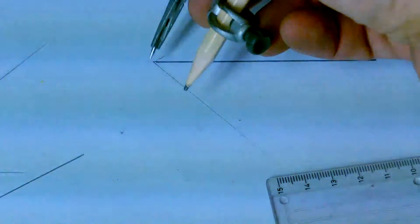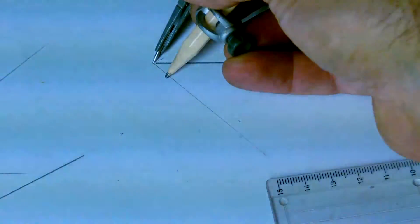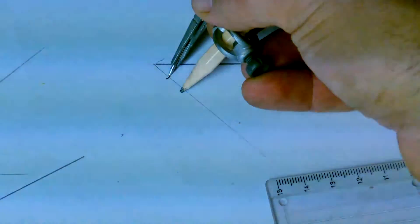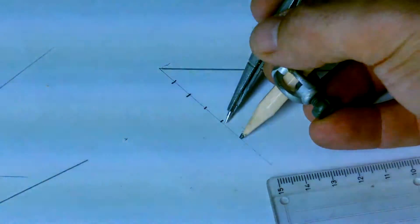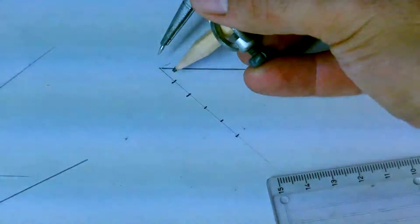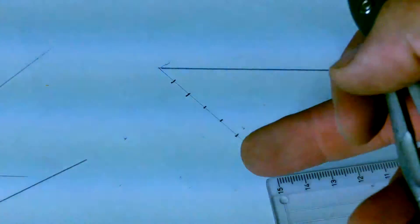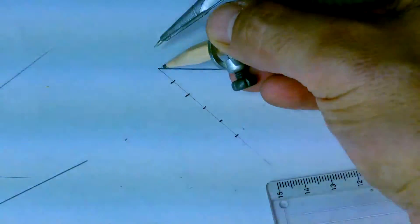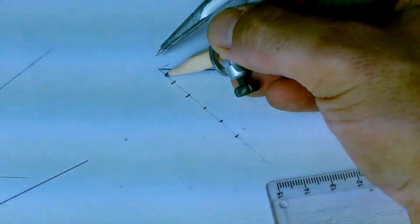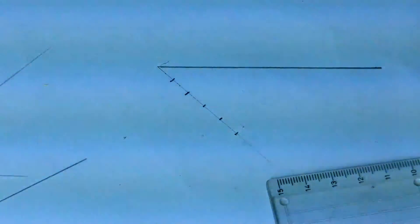On this new line I'm going to mark off five equal parts. They could be any length: one, two, three, four, five, just as long as they're all equal. Make sure you've got five spaces, not five dots: one, two, three, four, five.